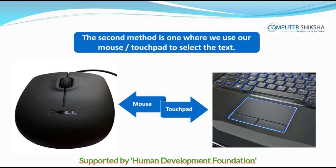The second method is one where we use our mouse or touchpad to select the text. In this method, we need to bring our cursor to either the beginning or the end of the word, line, or paragraph that we want to select. If you are using a touchpad, press the left button with one hand and with the other hand, swipe a finger towards the right or left such that the text you want to select begins to appear in a blue background.